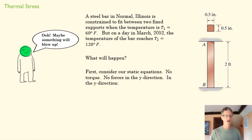If we expand that bar while it's between two immoveable supports, static equations: no torque, no forces in the x direction, and in the y direction we just have two support forces. Great, A is equal to B. That's not hard for us to figure out, but it tells us absolutely nothing. We have two unknowns in one equation.